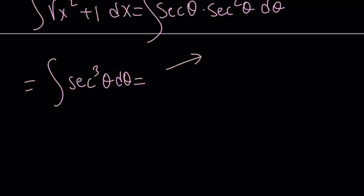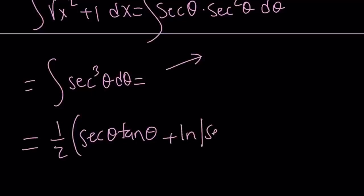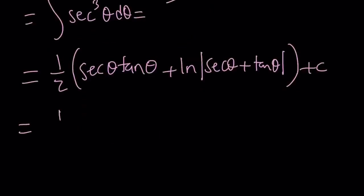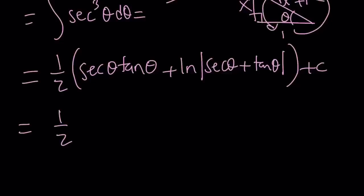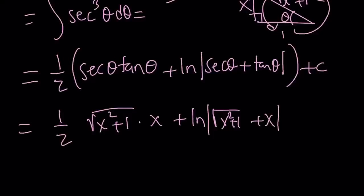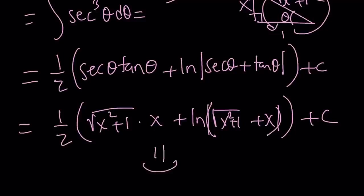Let's go ahead and write down what the integral of secant cubed theta is — that is one-half secant theta tangent theta plus ln secant theta plus tangent theta, all plus c. If you plug in the values: tangent theta is x, and the hypotenuse is square root of x squared plus 1, so secant is square root of x squared plus 1. Multiply that by x, and then ln of the sum of those two things — and you've got the answer. I don't need the absolute value because this quantity is always positive.